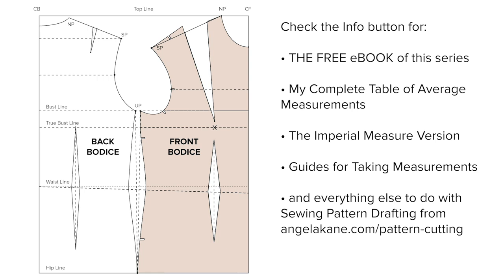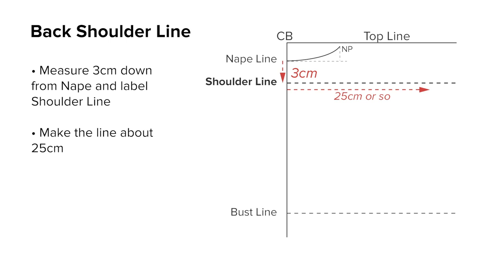The back shoulder line. Measure 3 centimeters down from the nape line. Square across a guide line of about 25 centimeters and label it the shoulder line.